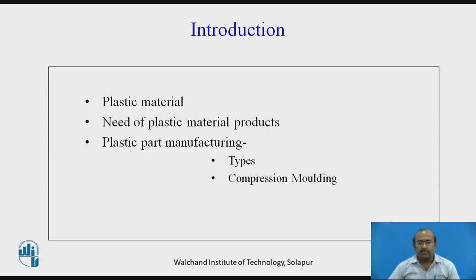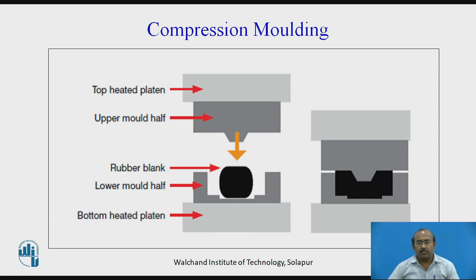Let us briefly introduce about the plastic material and its need. As we know, plastic is an advanced material nowadays, used not only to build new products but also for replacement of existing materials for particular products. This is because of the many advantages over metal as well as non-metal. Considering various parameters, there are varieties of plastic part manufacturing methods developed. Out of that, we know the compression molding process. As we apply the compression force over the particular charge, it flows into the mold cavity and gets the exact size, shape, and geometry replica as that of the mold cavity itself.